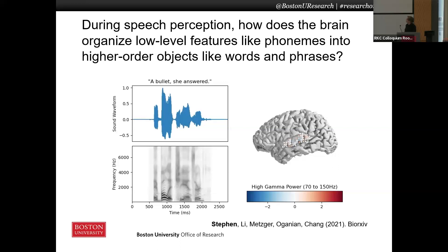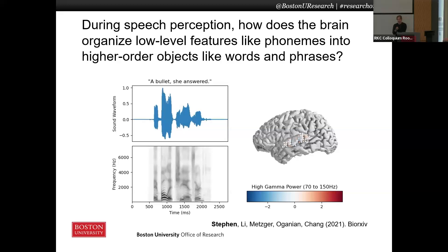We're also interested in the superior temporal gyrus, which is shown here, which is involved in speech perception. In particular, it's known to encode low-level features like phonemes — consonants, vowels, plosives, things like that. And we don't know how those phonemes are put together into higher-order auditory objects like words.